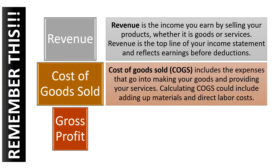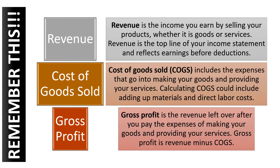Cost of goods sold includes the expenses that go into making your goods and providing your services. Calculating COGS could include adding up materials and direct labor costs. And last, the gross profit. Gross profit is the revenue left over after you pay the expenses of making your goods and providing your services. Gross profit is revenue minus cost of goods sold — the profit the businessman earns after paying the cost of goods sold.